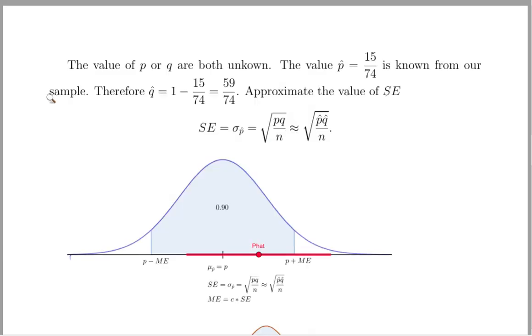But here's the problem, the value of P and the value of Q are both unknown to us. The value of P-hat is 15 over 74, that is known from the sample. Therefore, Q-hat will be 59 over 74, and we'll use those values to approximate this standard error.